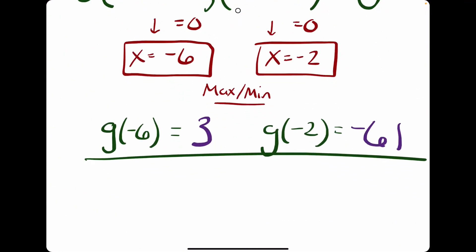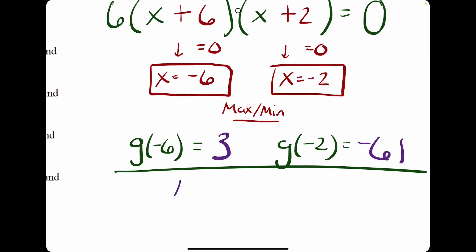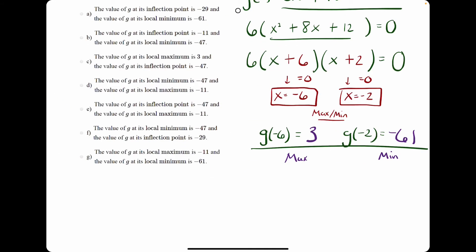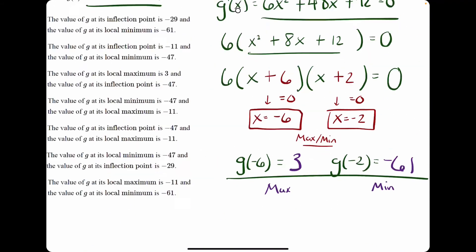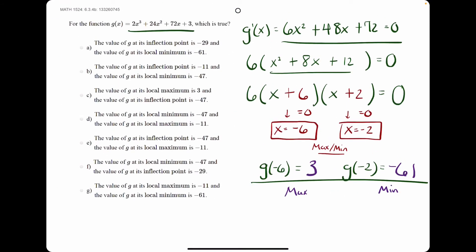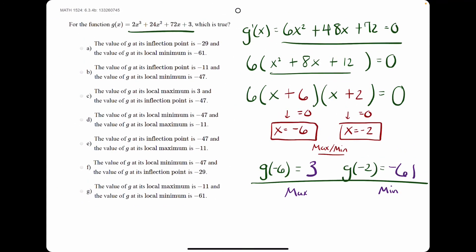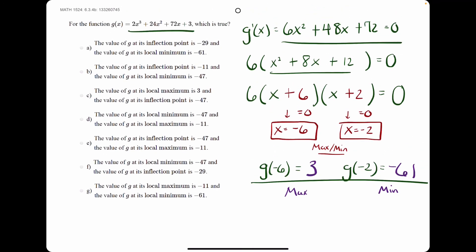The higher value, 3, would be our max. The lower value would be our minimum, negative 61. Sometimes we can find the answer with just the max of 3 and min of negative 61 and call it a day, but it does not look like that's the case in this problem. The next step is finding the g value of the inflection point.